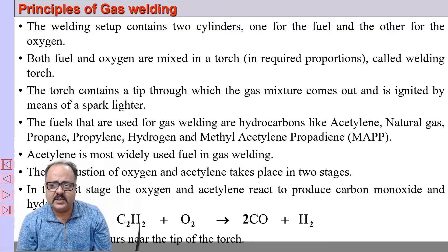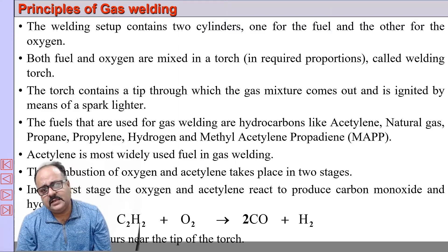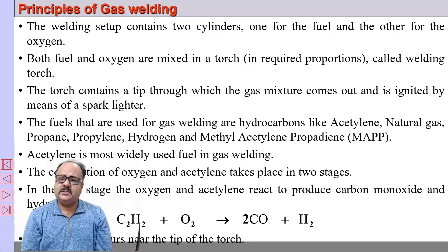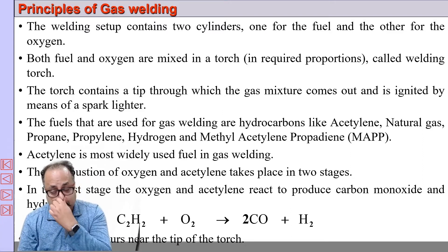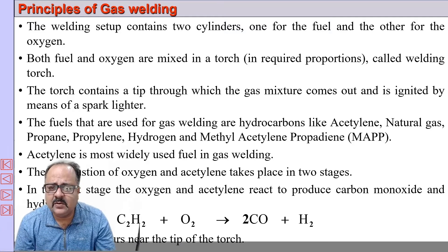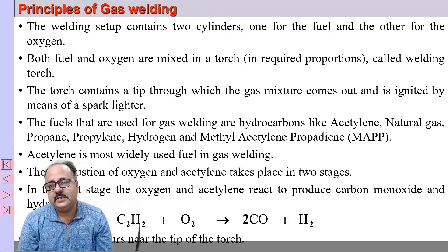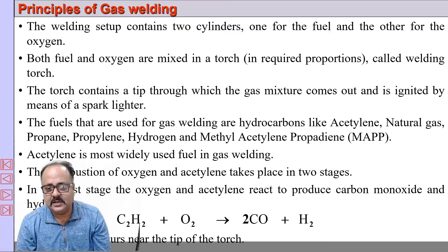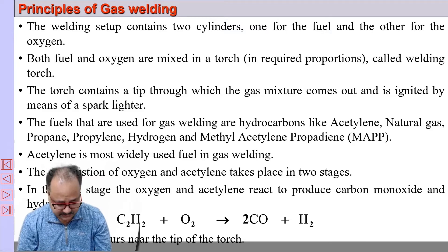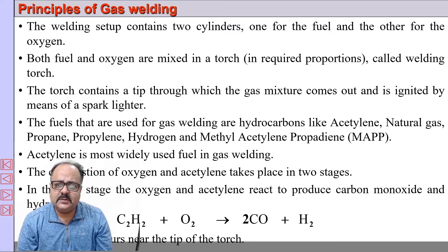The fuels normally used are acetylene, natural gas, propane, propylene, hydrogen, methyl acetylene, and propadene. In India, we mostly use acetylene, because it gives the highest heat — around 3200 degrees centigrade — while the rest of the fuel gases give around 2900 degrees centigrade. In North America, MAP gas is used in abundance, whereas in India we mostly use acetylene.